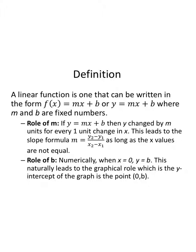That gives us a slope formula. The slope m is the change in y over the change in x. We can't have equal x values — that gives a zero in the denominator, which is bad. So as long as the x values aren't the same, we can use this to find m, the slope.